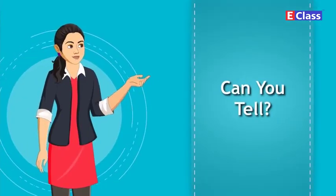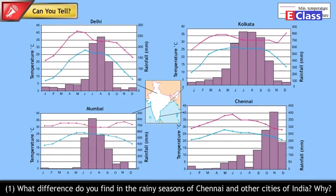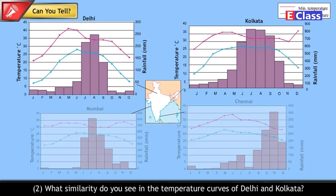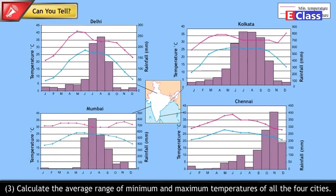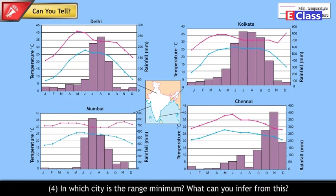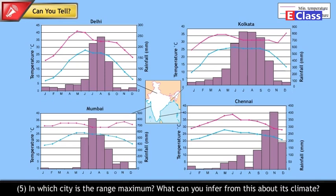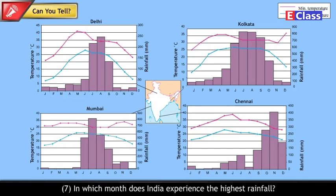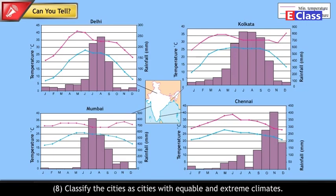Can you tell what difference you find in the rainy seasons of Chennai and other cities of India, and why? What similarity do you see in the temperature curves of Delhi and Kolkata? Calculate the average range of minimum and maximum temperatures of all four cities. In which city is the range minimum, and what can you infer from this? In which city is the range maximum, and what does that tell you about its climate? Based on the temperature and rainfall of Mumbai, comment upon its climate. In which month does India experience the highest rainfall? Classify the cities as having equable or extreme climates.